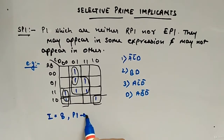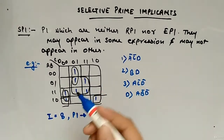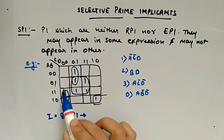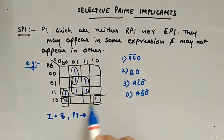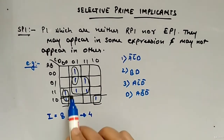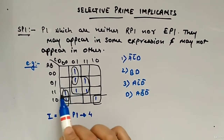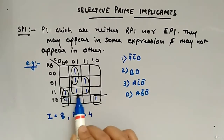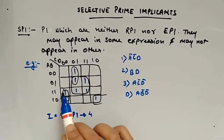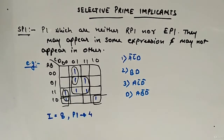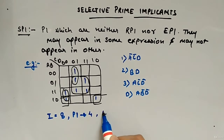What about prime implicants? Best possible groups. I have already marked one, two, three, four — total four groups. You can also pair this way instead of this pairing — you can do this pairing, still it will be right. Total four prime implicants will be there.